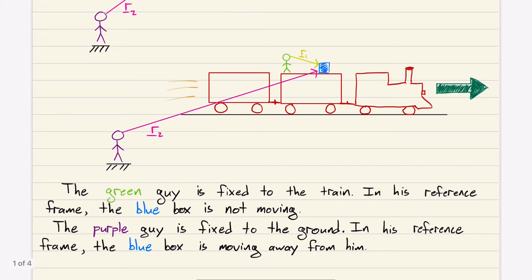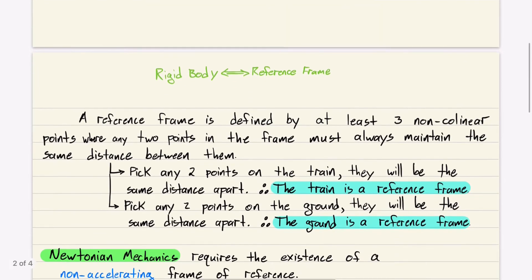Just to reiterate, the green guy is fixed to the train. In his reference frame, the blue box is not moving. The purple guy is fixed to the ground. In his frame of reference, the blue box is moving away from him. So how do we define a reference frame?